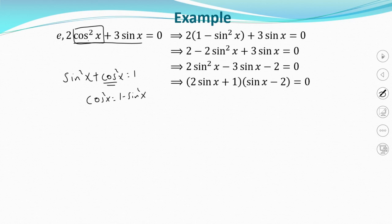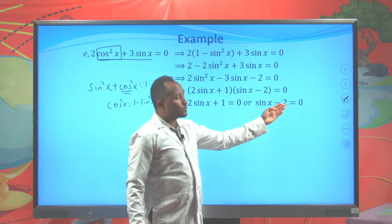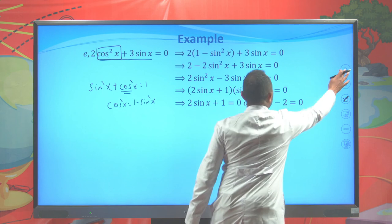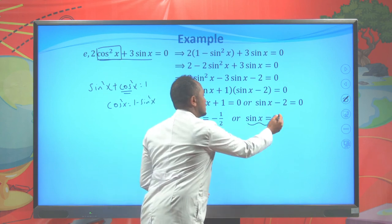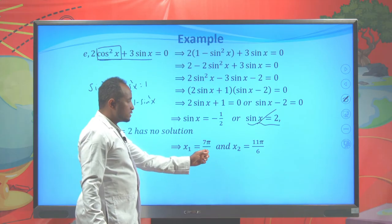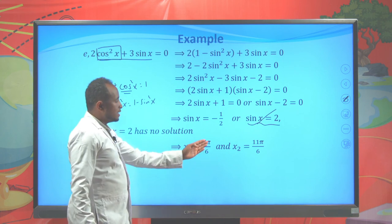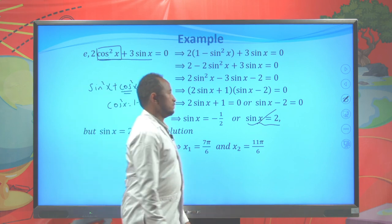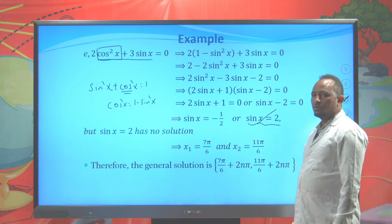Rearranging and factoring: (2sin(x) + 1)(sin(x) − 2) = 0. This gives sin(x) = −1/2 or sin(x) = 2. Since sin(x) cannot equal 2, that has no solution. For sin(x) = −1/2, we already found x₁ = 7π/6 and x₂ = 11π/6. The general solution is: 7π/6 + 2nπ, 11π/6 + 2nπ.